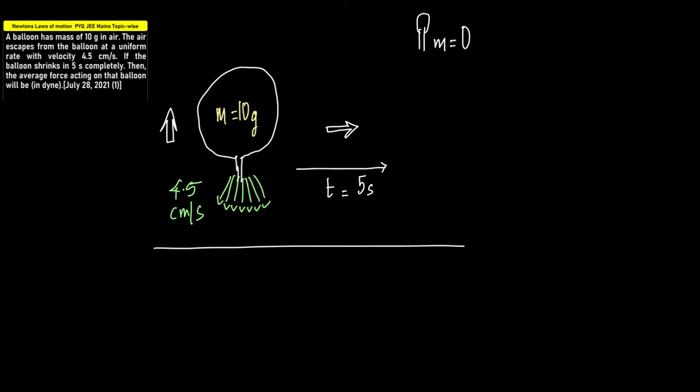The mathematical form to understand this is that F equals dp/dt, which is equal to d/dt of mv.